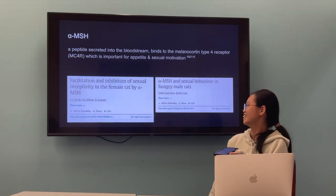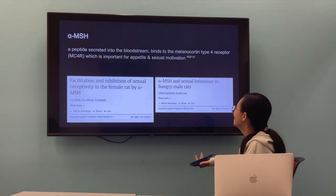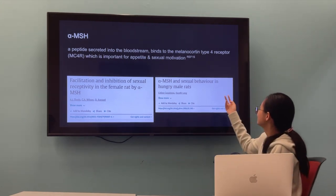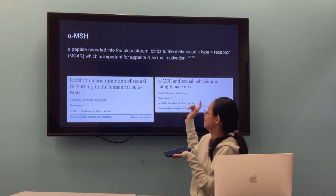Alpha-MSH is a peptide secreted into the bloodstream. It's a hormone, and it binds to the melanocortin type 4 receptor, MC4R, which is important for appetite and sexual motivation.